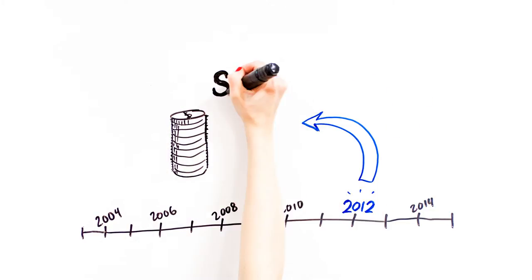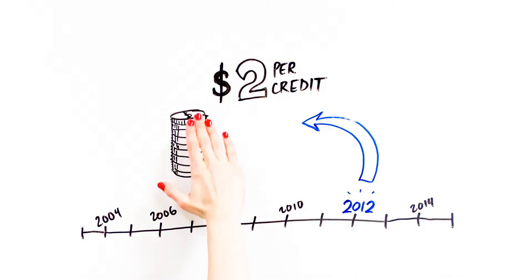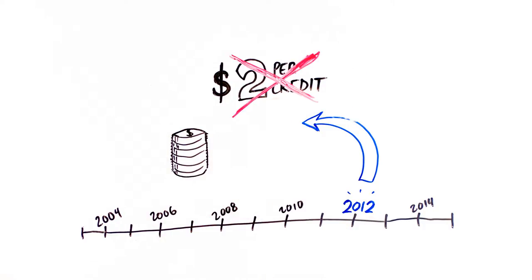This led the CSU to reconsider the purpose of the fund, and in 2012, students voted to decrease it from $2 per credit to $1.50 per credit.